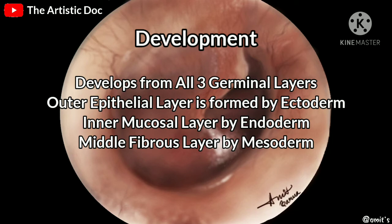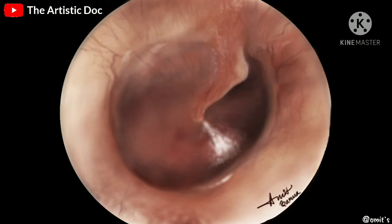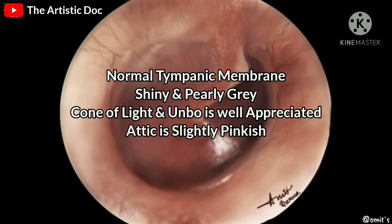The whole medial surface is supplied by Jacobson's nerve. The tympanic membrane develops from all three germinal layers: the outer epithelial layer from the ectoderm, the inner mucosal layer from the endoderm, and the middle fibrous layer from the mesoderm.